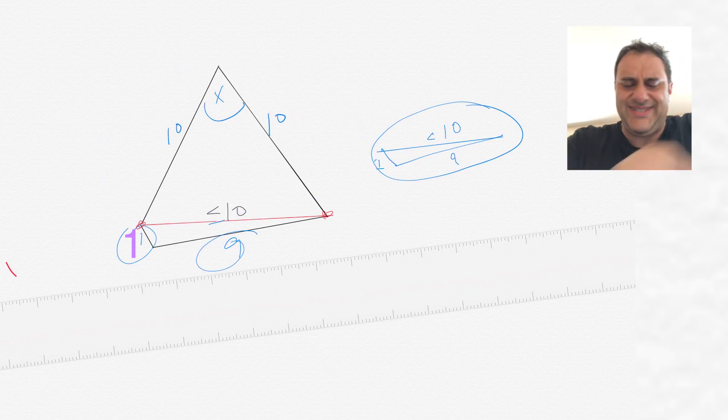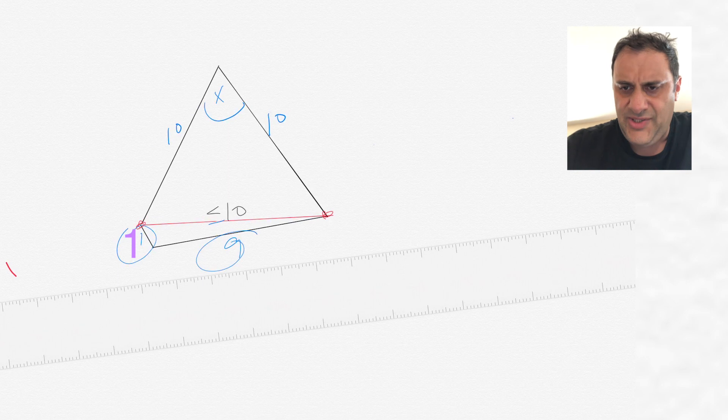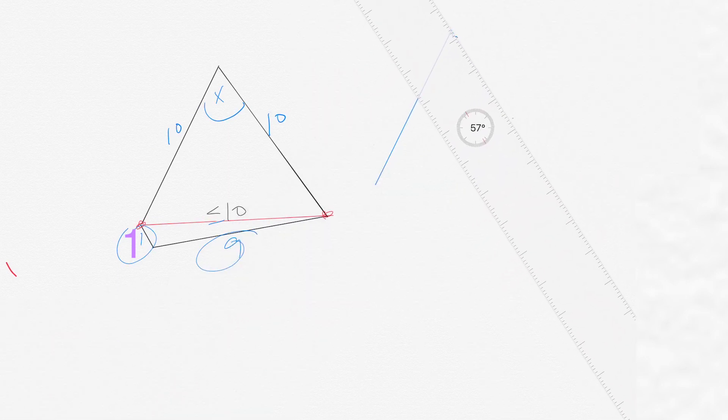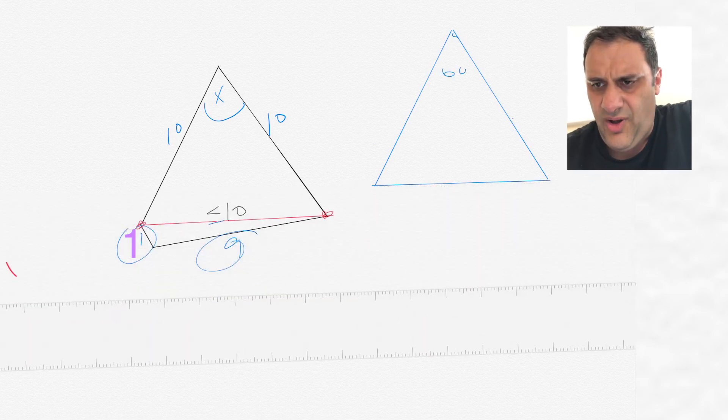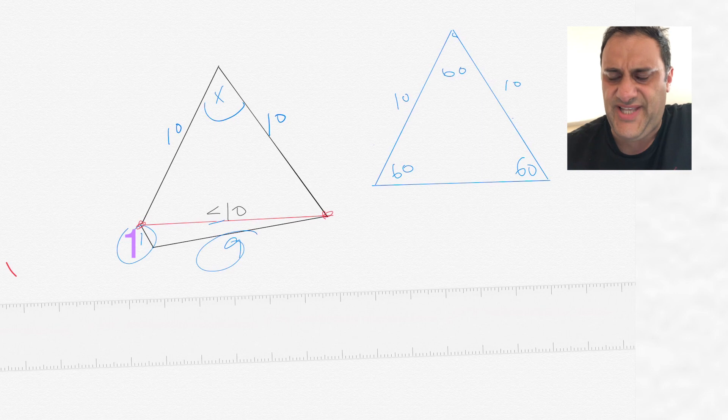Imagine that side on the bottom was 10. If it was 10, then we would have an equilateral triangle. We would have three sides of 10, 10, and 10. You'd have a triangle where all of the angles are 60 degrees. That is an equilateral triangle if all of these are 10.